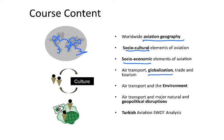Globalization is a very common term these days and we will be looking at how air transport has facilitated globalization. But there are also negative elements, such as the effect on the environment — if we keep growing the industry, what is going to be the impact on the environment? And sometimes we have geographical disruptions, such as an earthquake or a war, and we will look at how air transport is affected in those cases.